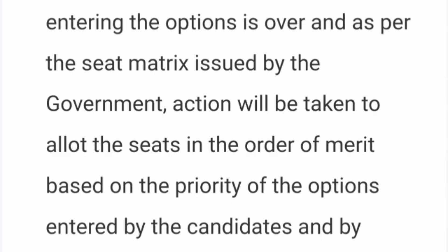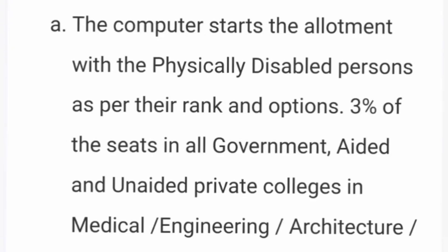Once the last date for option entry is fixed and your option entry is completed, the government will release the seat matrix showing how many seats are available in the first round of counseling, provided as per the reservation policy. The computer begins allotment from special category seats. Within special categories, physically disabled students are allotted seats first — three percent of all seats in government, aided, unaided, and private institutions across medical, engineering, architecture, and farm sciences are reserved only for physically disabled students.